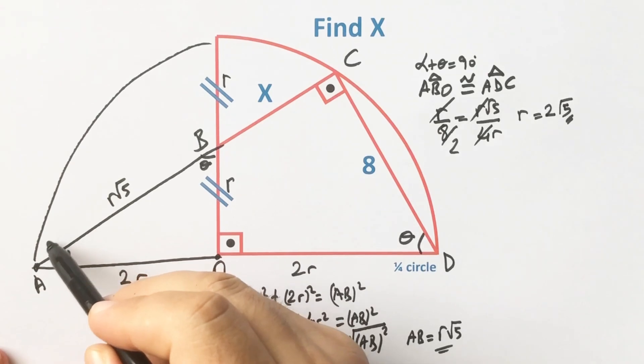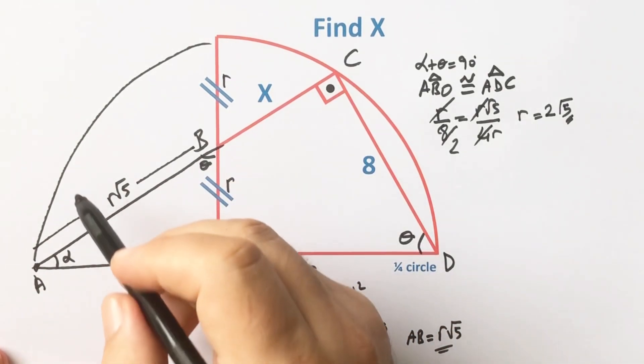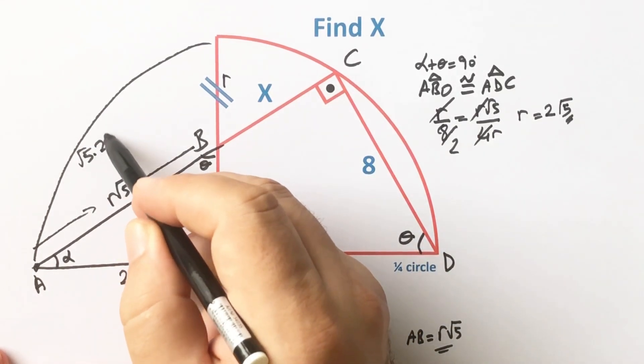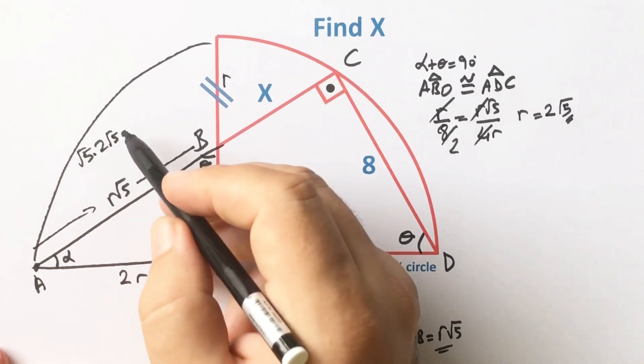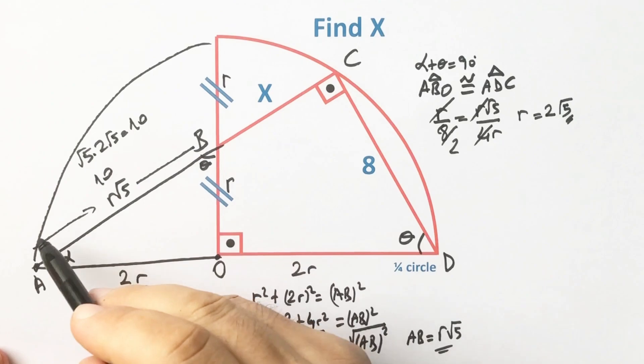Therefore, this length turns out to be 10 units, since R equals 2√5. So this length equals 10 units.